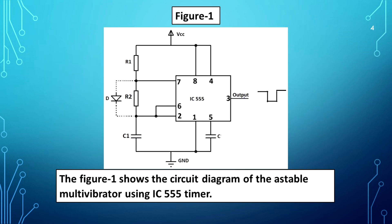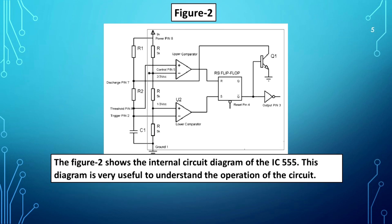Figure 1 shows the circuit diagram of the astable multivibrator using the IC 555 timer. Figure 2 shows the internal circuit diagram of the IC 555. This diagram is very useful to understand the operation of the circuit.